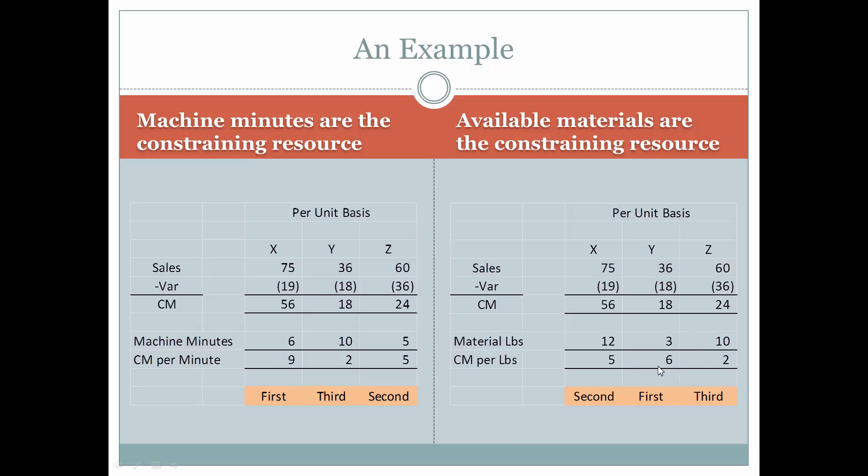Therefore, the one with the highest contribution margin in relationship to the constraining resource would be Y. So that would be the first product that they would make. After that, they would use the next highest contribution margin per pound, which would be $5. And that would be product X. And so that would be the second one that they would produce. And the third one being product Z.